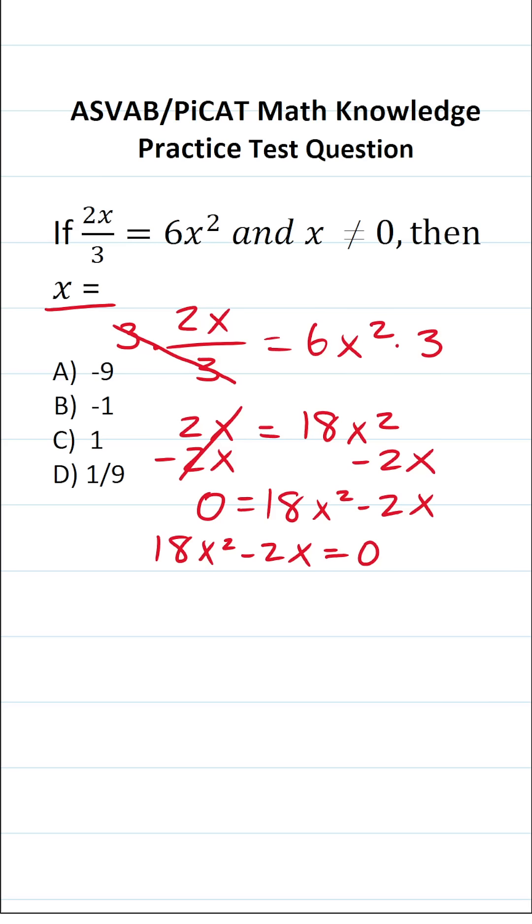Now in order to solve this equation from here I'm going to factor out a common factor from 18x squared and negative 2x and that common factor is going to be 2x. That leaves me with 9x minus 1 in parentheses there.